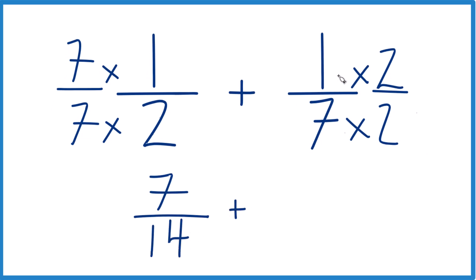And over here 1 times 2 is 2. 7 times 2 is 14. So now we have the same denominator. Just add the numerators together. 7 plus 2 is 9.